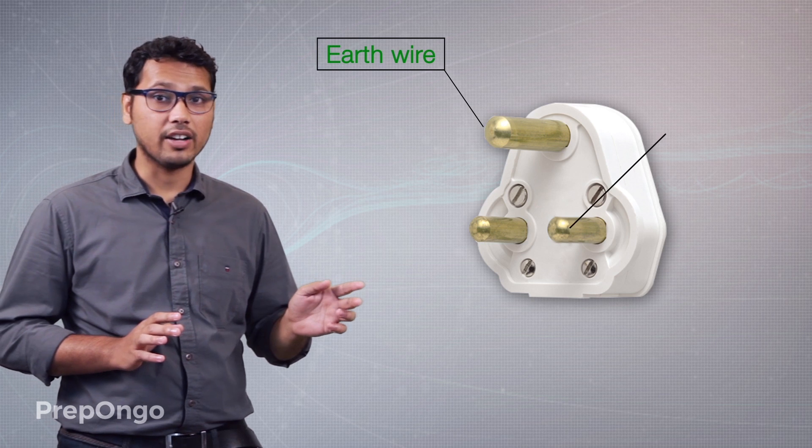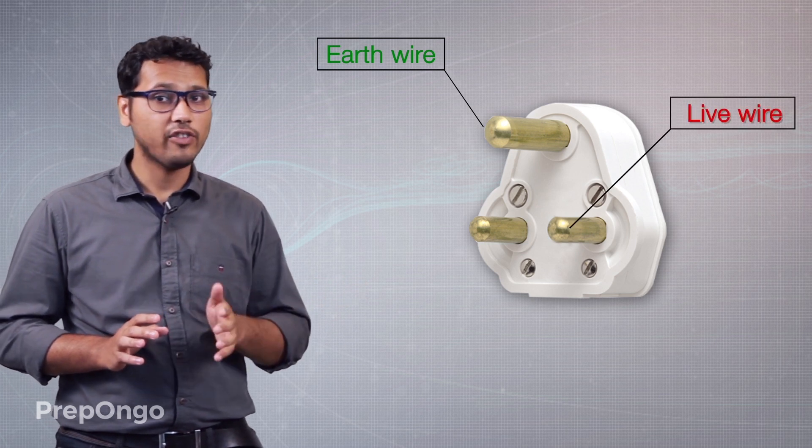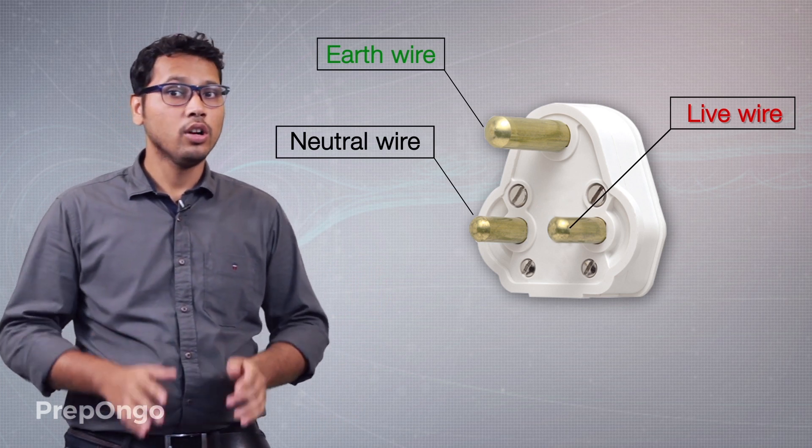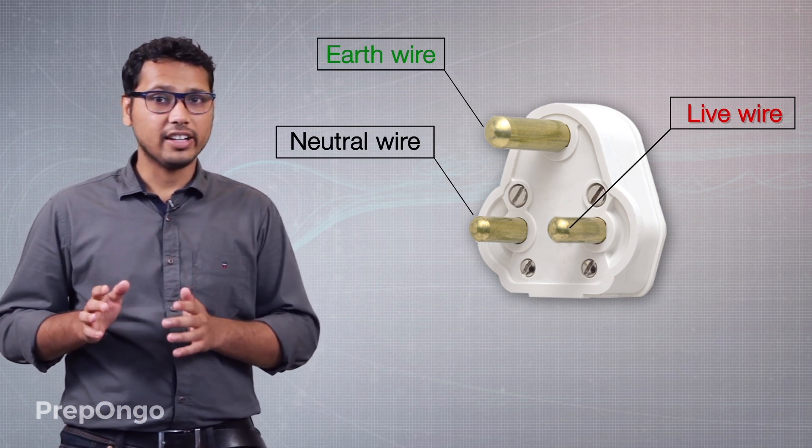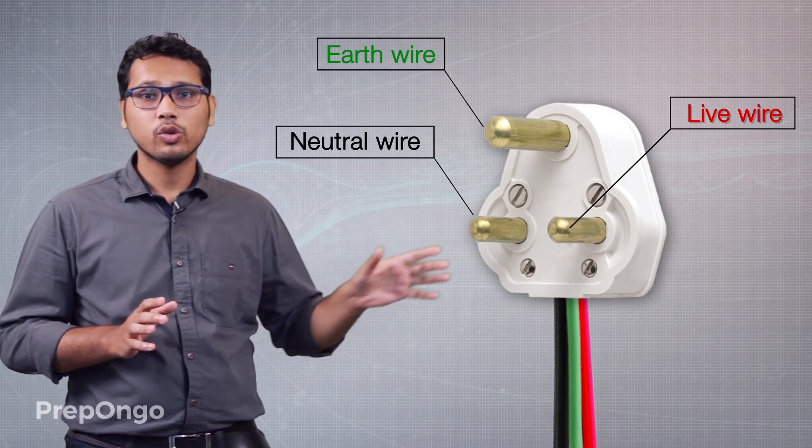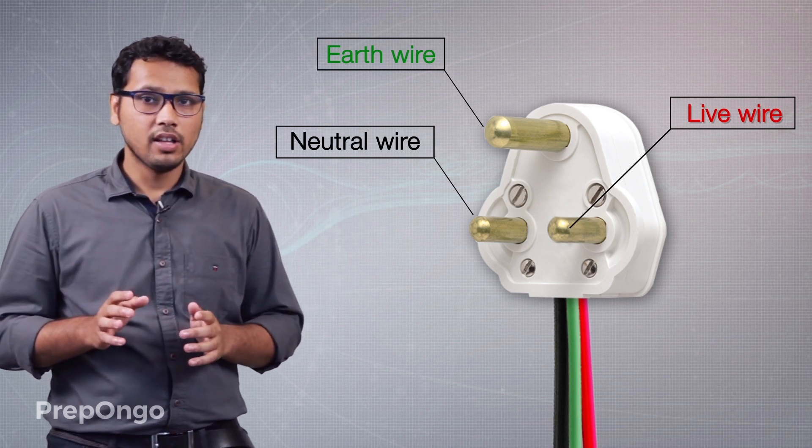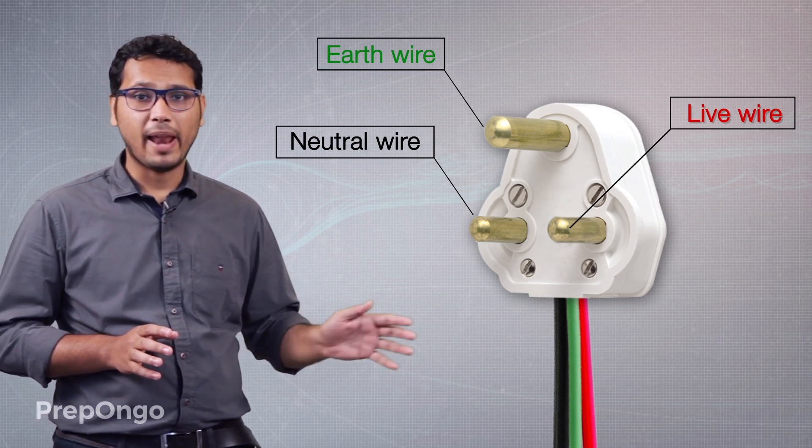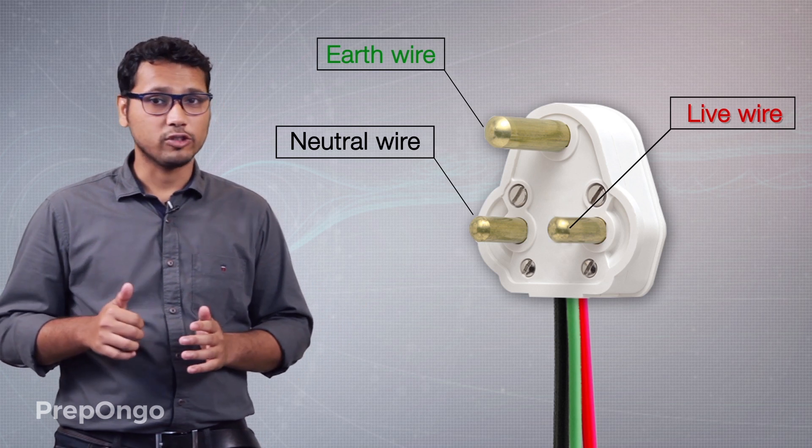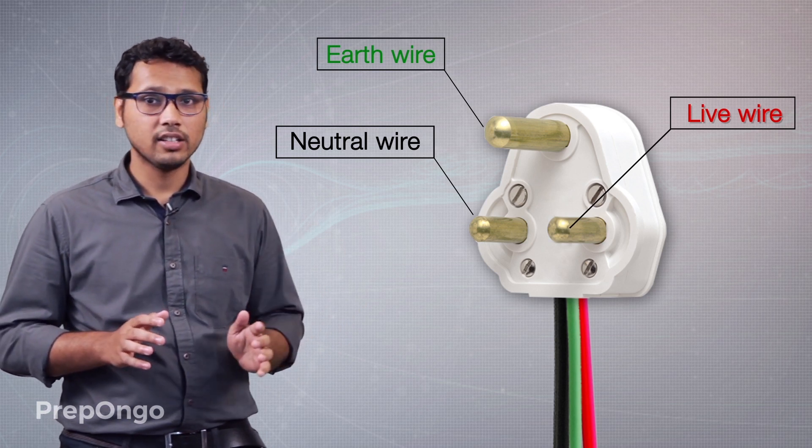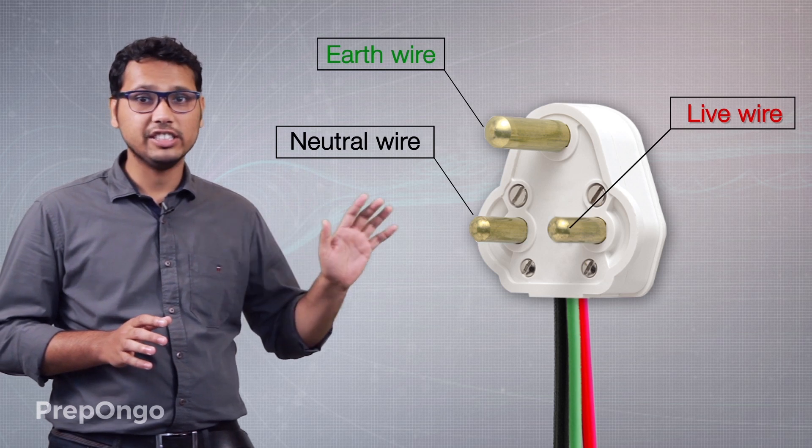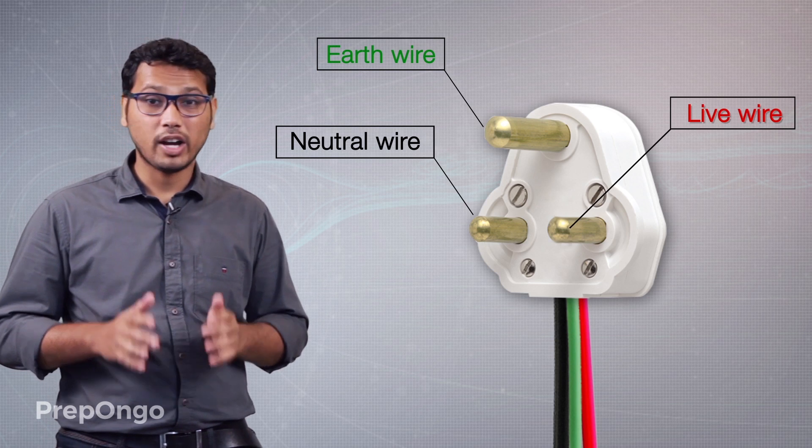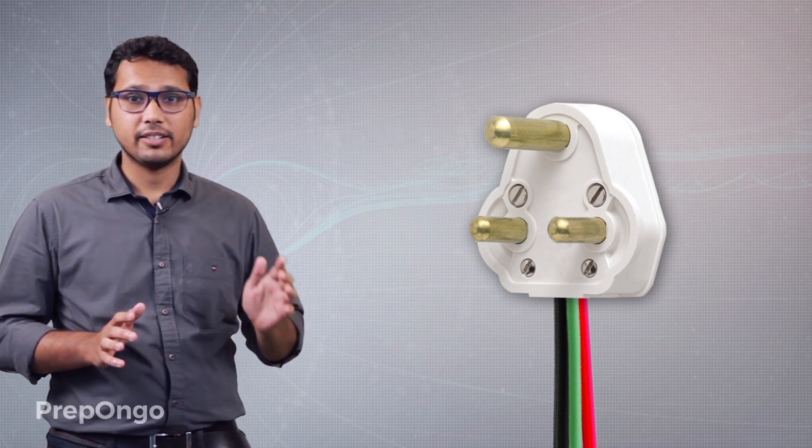Now the rest two pins - one is for the live wire and the other is for the neutral wire. Three color wires are always used for connecting through these three pins. One is the green wire, other is the red wire and last is the black wire. Why is it so that we always use these three colors only for these wires? There is a reason behind this too. This is to ensure that you connect the right wire into the right pin.